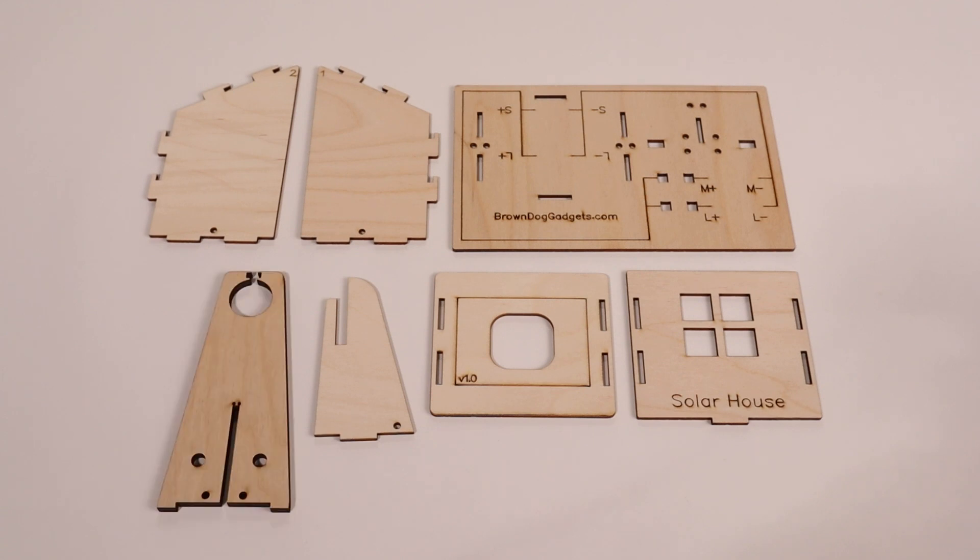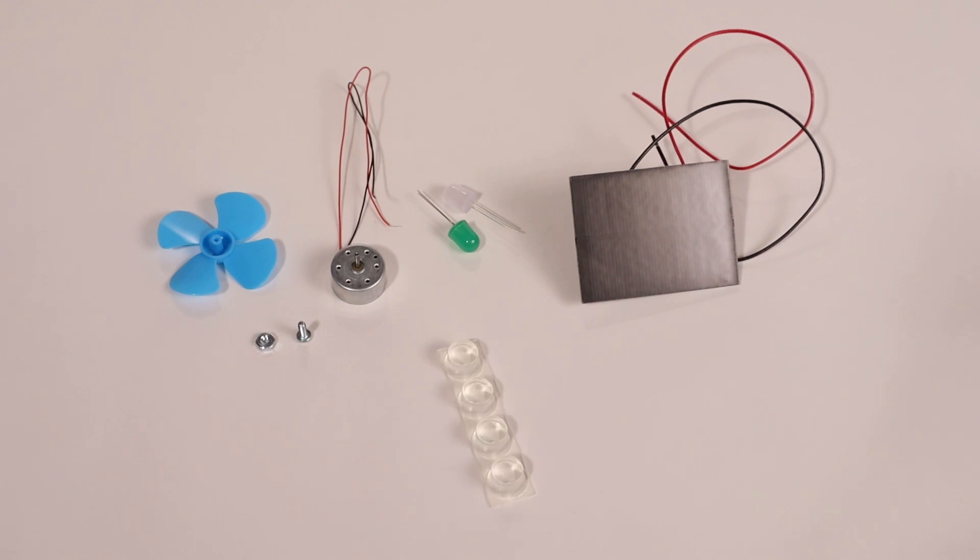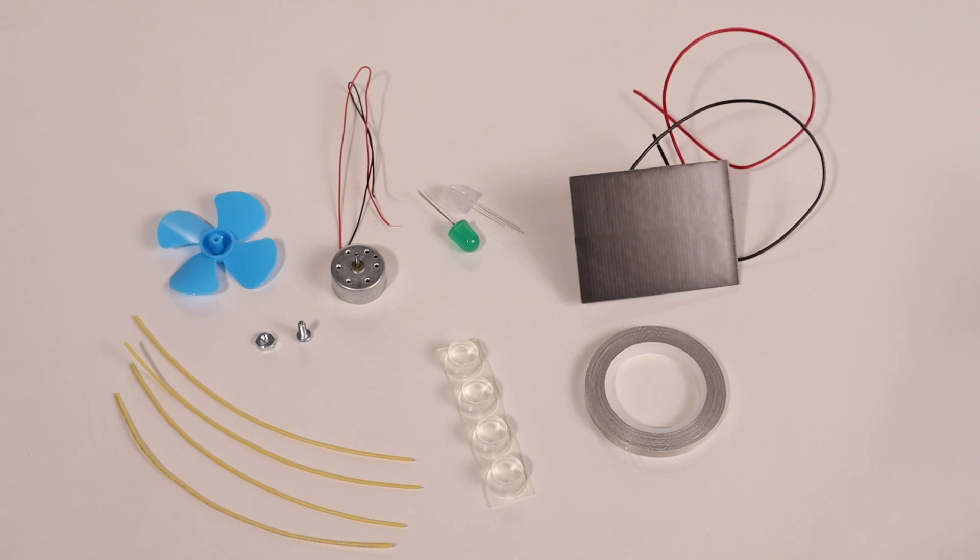Nine laser-cut wood pieces, one solar panel, one green LED and one white LED, an electric motor, fan blade, nut and bolt, four rubber feet, some short lengths of wire, and a roll of quarter inch wide Maker Tape.